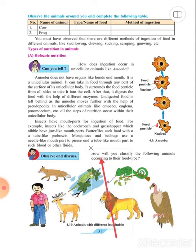Observe and discuss. How will you classify the following animals according to their food type? Many pictures of animals are given. They all are having different types of ingestion. These animals can be classified according to their food type. Observe all this picture and try to classify all that organism according to their food type.